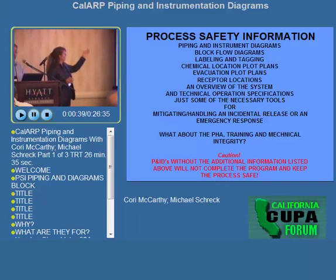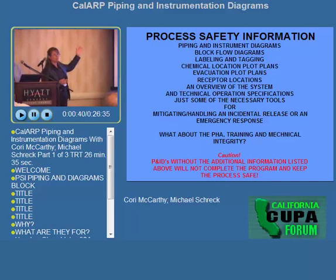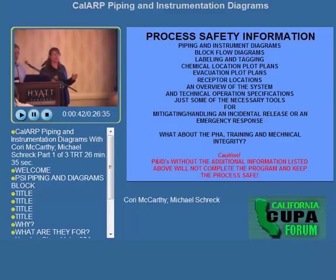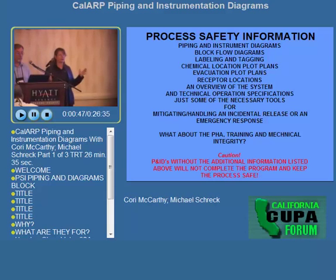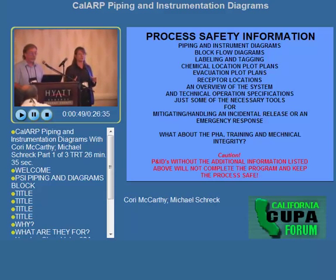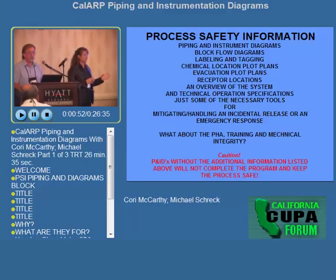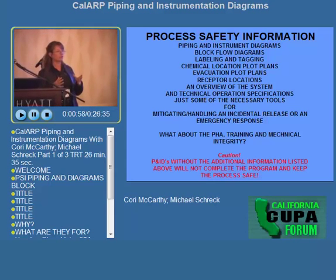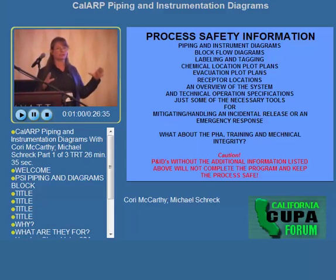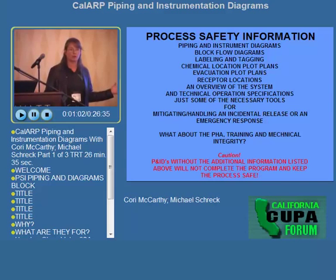We're looking at other things such as block flow diagrams, labeling and tagging of valves and piping. We're looking at chemical location plot plans so that when fire departments show up to respond to a release, they know the hazardous areas of the facility. We can't do that with ammonia piping, but it can be done with the rest of the chemicals that they store on a basis of frequencies.